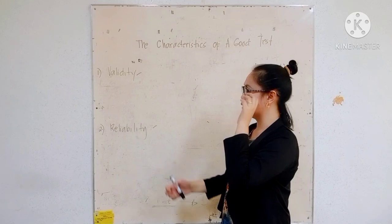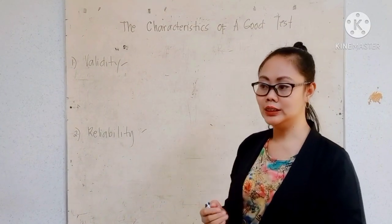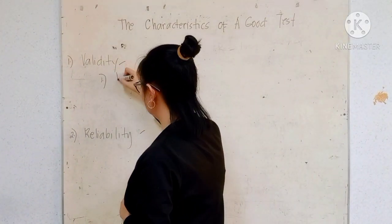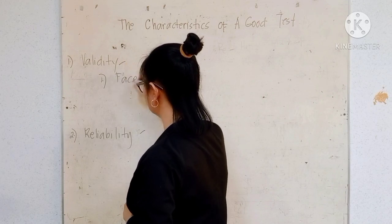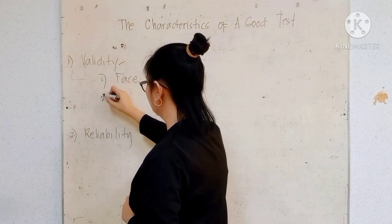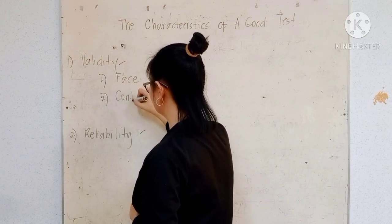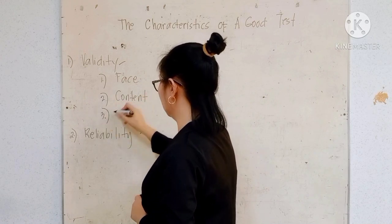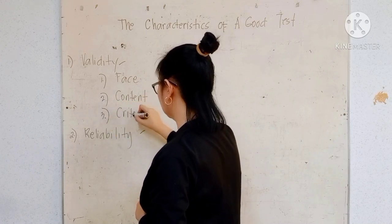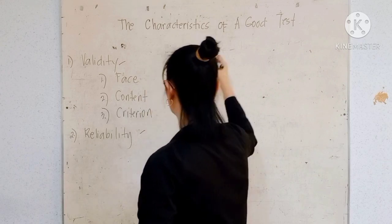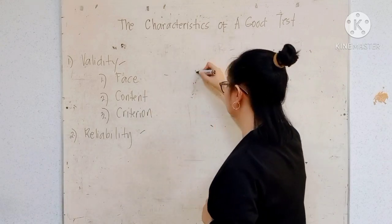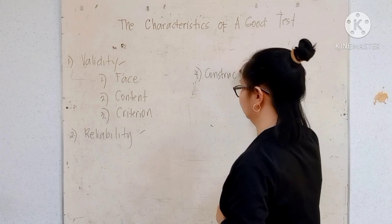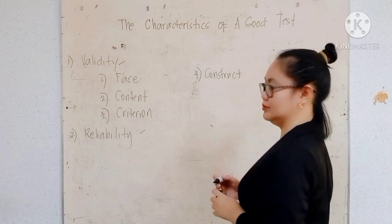We are going to discuss the different types of validity and the methods of computing the reliability of a test. For validity, we have four types: face validity, content validity, criterion validity, and construct validity.